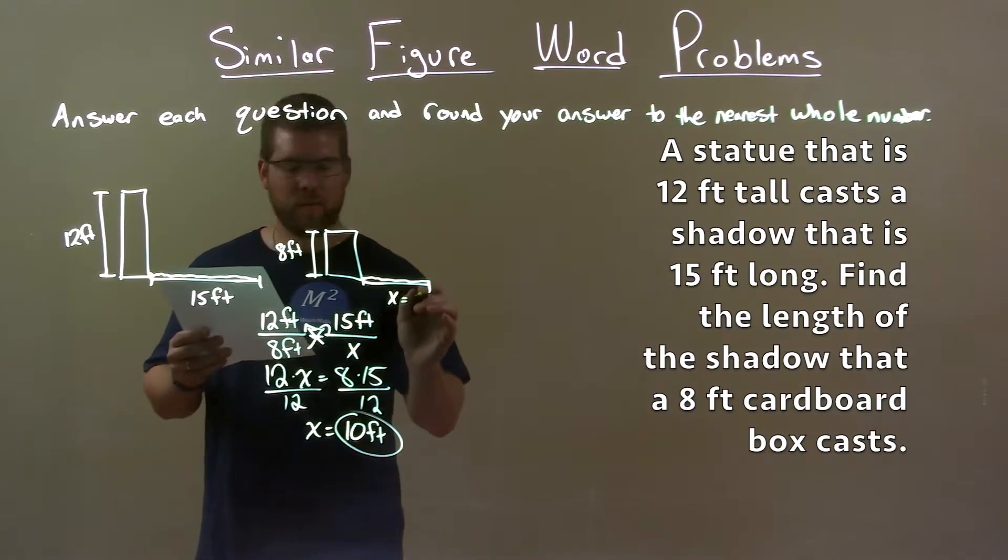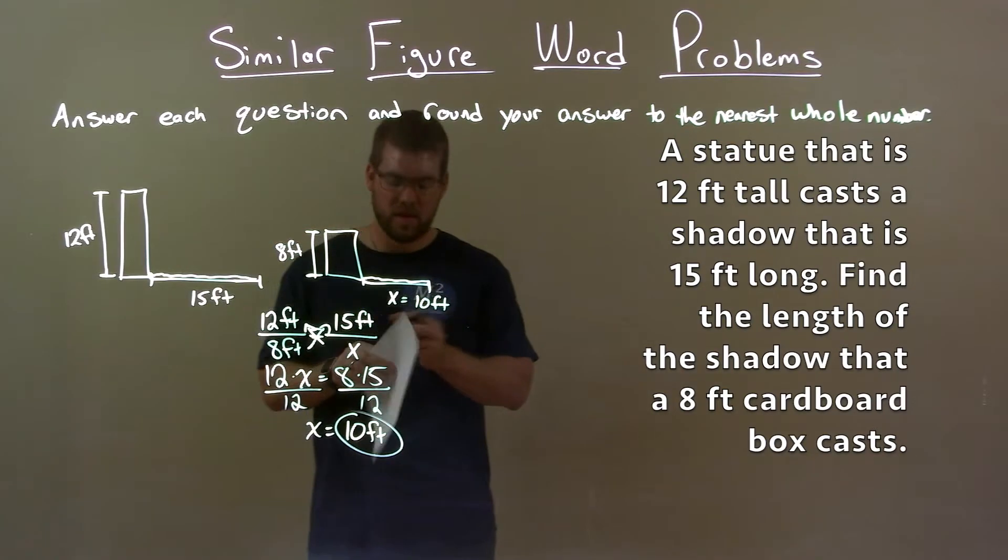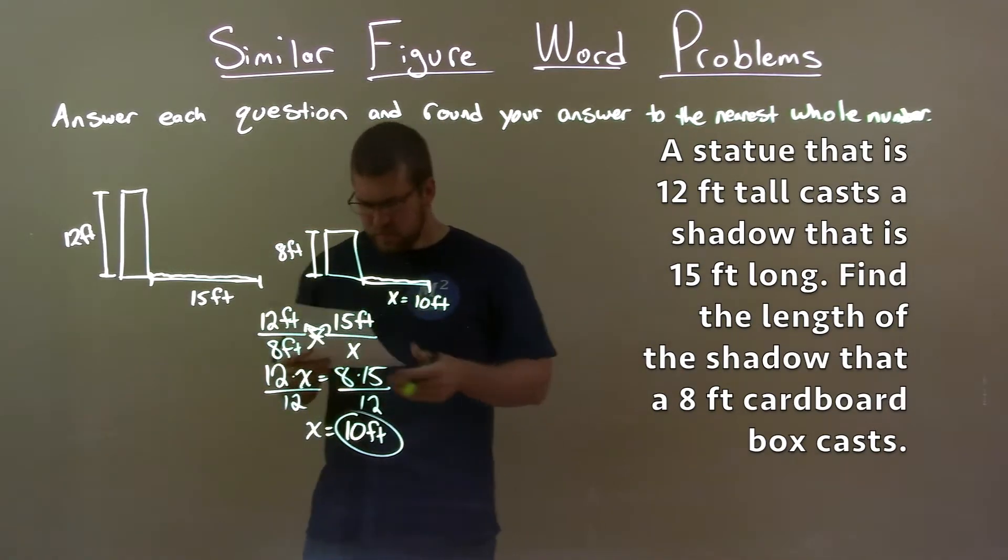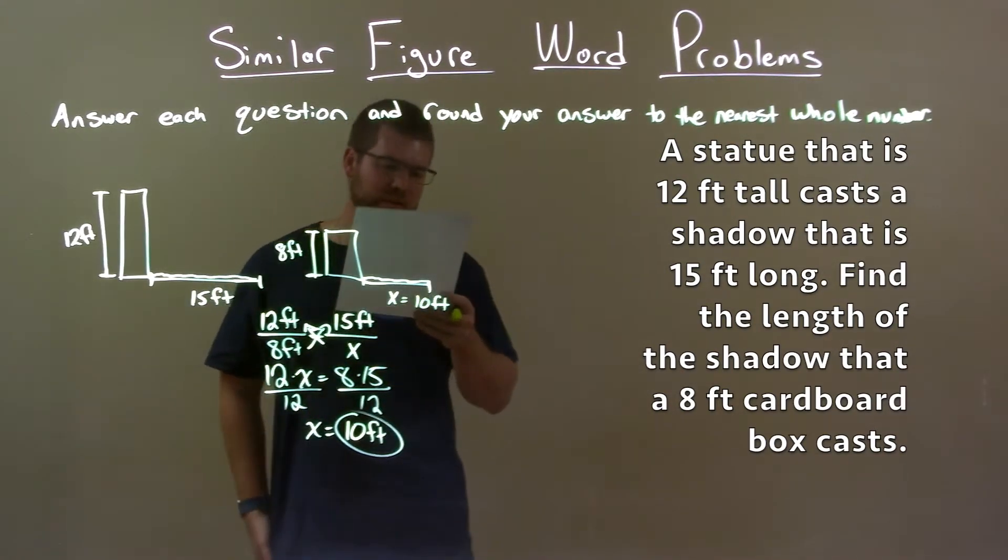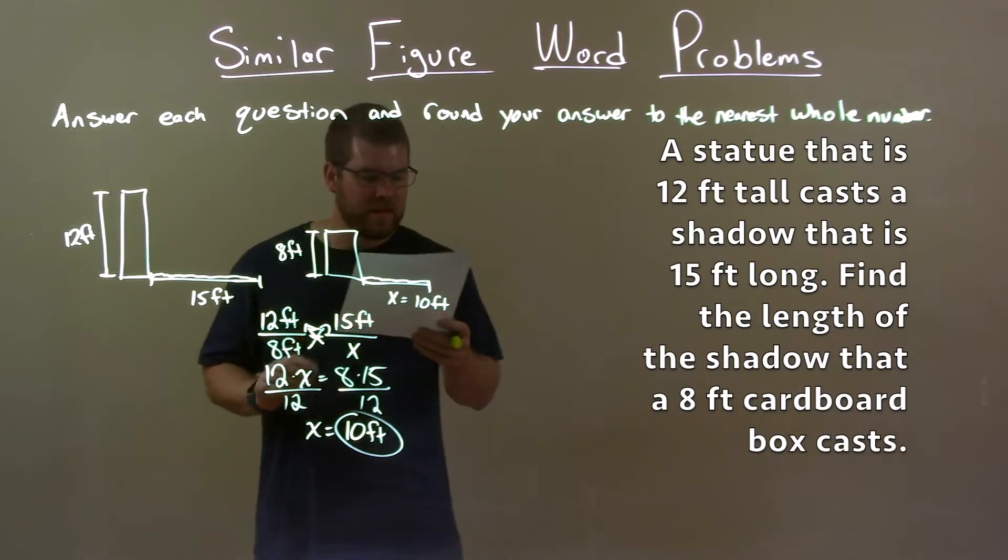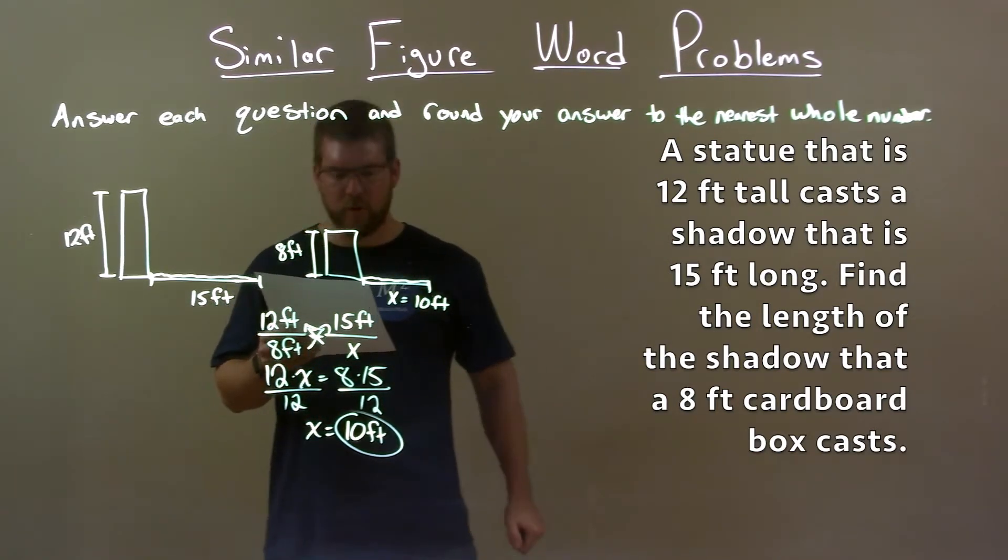And so, the box casts a shadow that's 10 feet long. So quick recap, we're given a statue that is 12 feet tall that casts a shadow 15 feet long. Find the length of the shadow that an 8-foot cardboard box casts.